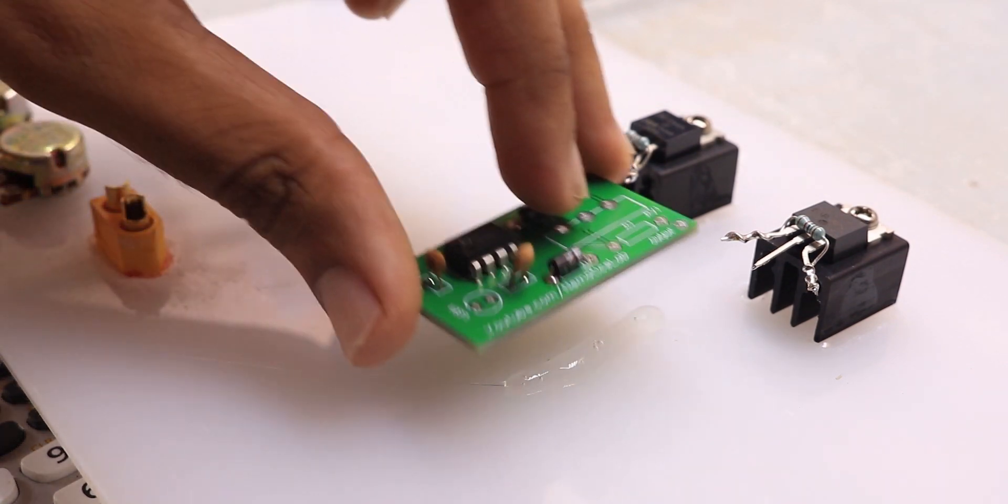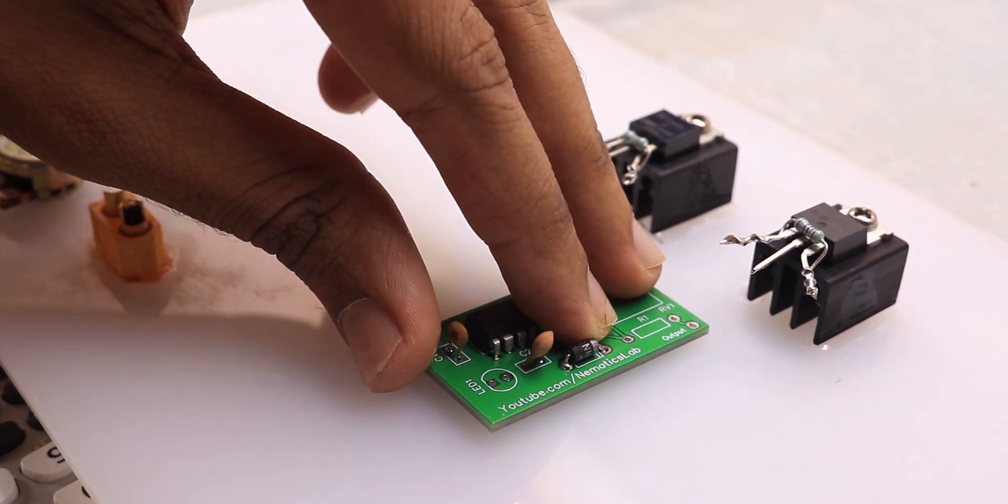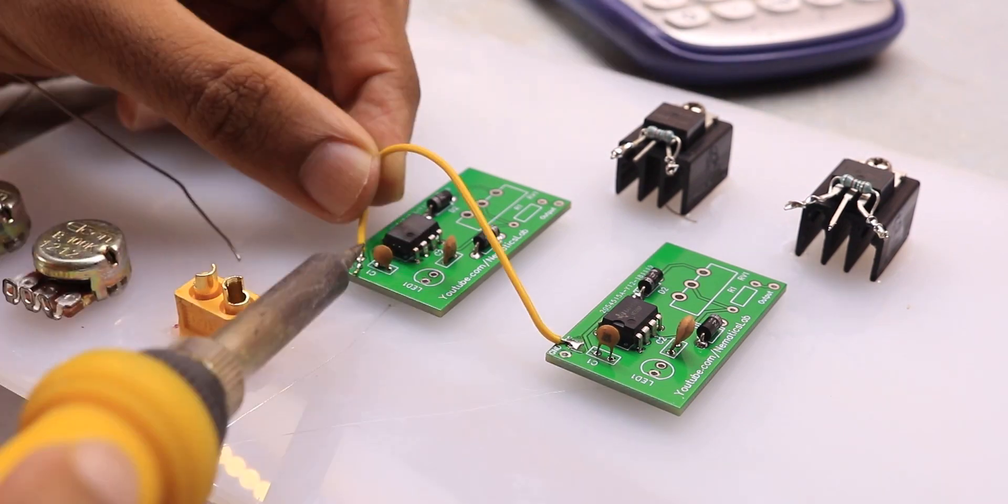Now it's just a matter of connecting all the parts like potentiometer, timer and MOSFET together using some wires as per the schematic.